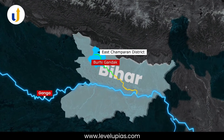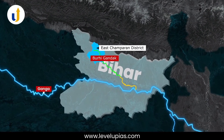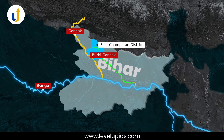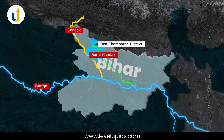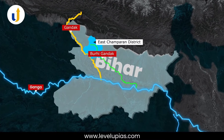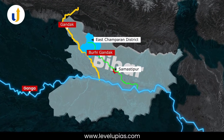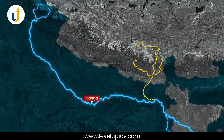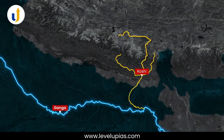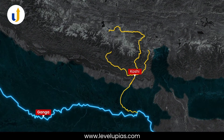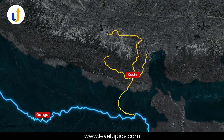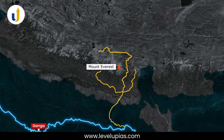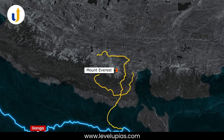The Burhi Gandak initially flows through the East Champaran district. It flows parallel to and east of the Gandak River in an old channel. Samastipur is situated on it. The Kosi is an antecedent river with its source to the north of Mount Everest in Tibet, where its mainstream, the Arun, rises.